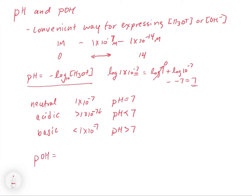We can do the exact same thing for pOH. The pOH is equal to the negative log base 10 of the concentration of OH⁻. At neutral, pOH is also equal to 7 because the concentrations are equal. When we get into acidic conditions it's the opposite — the concentration of OH⁻ goes down, giving pOH greater than 7. For basic conditions, pOH is less than 7. These two scales trend opposite to each other.